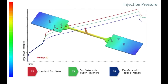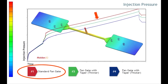Moving on to injection pressure requirements, let's first compare the standard and two tapered fan gate styles. Because the standard fan gate is the thinnest, it shows the highest pressure requirements. The pressures for both examples are similar until the material reaches the gate.